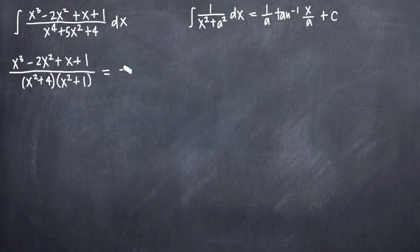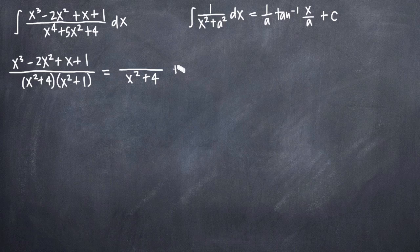So our partial fractions decomposition — what we do is we separate each factor in the denominator into its own fraction over here on the right-hand side. So we'll put the first factor x squared plus 4 into its own fraction, and we'll put the second factor x squared plus 1 into its own fraction like this.